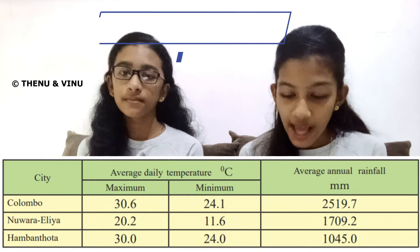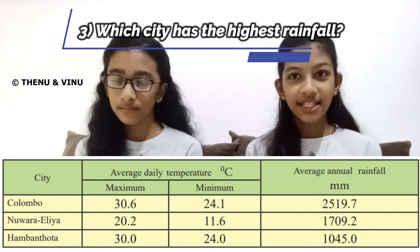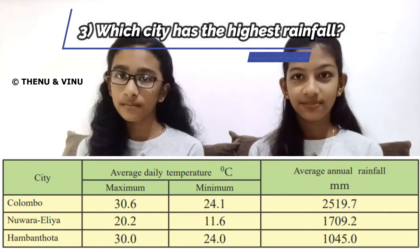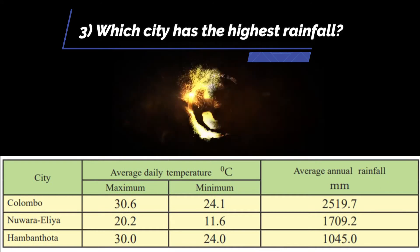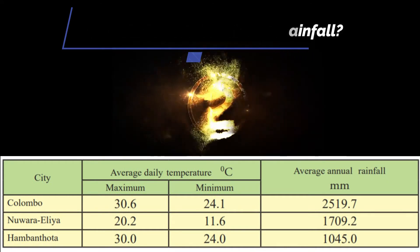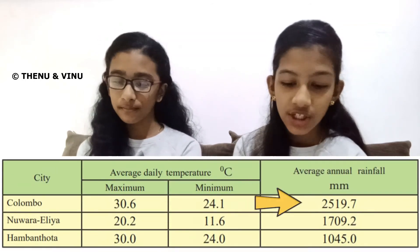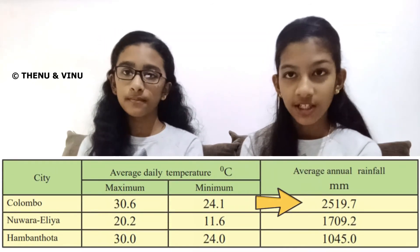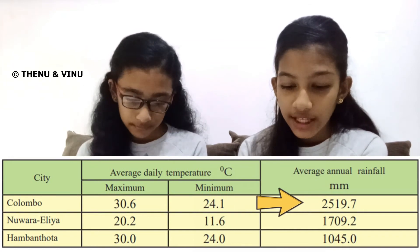The third question is: which city has the highest rainfall? We will give five seconds to answer. The answer is Colombo, because in the average annual rainfall column in millimeters, Colombo is the highest.